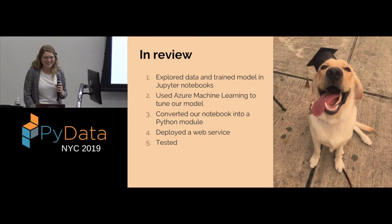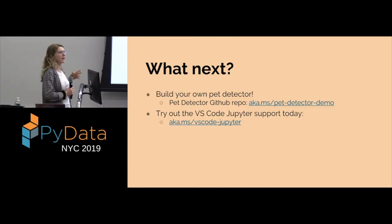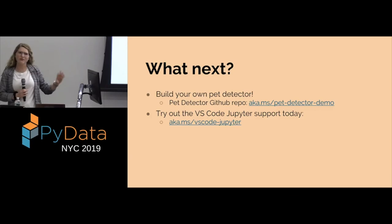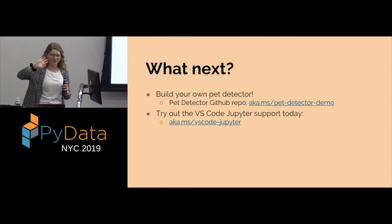For you folks, what's next? You could build your own pet detector — here's the GitHub repository. Try out the VS Code Jupyter support today — a super easy way to get started with Jupyter and VS Code. All you need is the Python extension: go to the extensions tab, install the Python extension, and it'll automatically handle the Jupyter installation. Just the Python extension — the Microsoft one — is all you need, and it's all explained at that link.